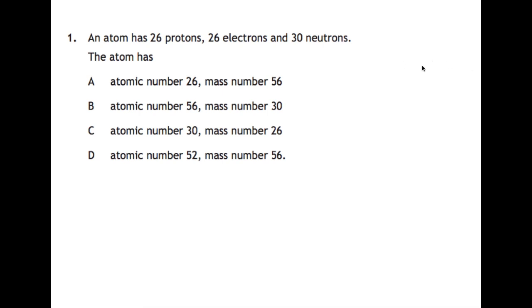Question one: an atom has 26 protons, 26 electrons and 30 neutrons. Atomic number is always the number of protons, so that means atomic number for us can only be 26. Mass number is always your number of protons plus your number of neutrons, so if we add together 26 and 30 we get 56. So our answer is A.